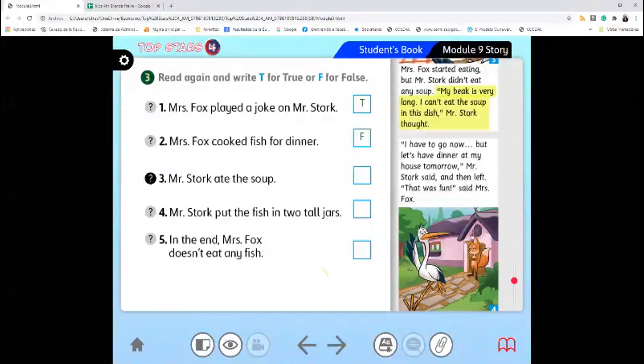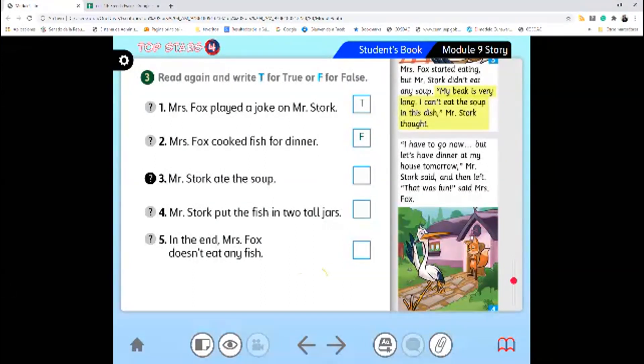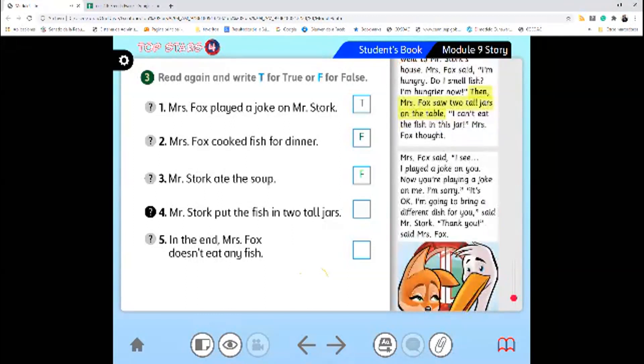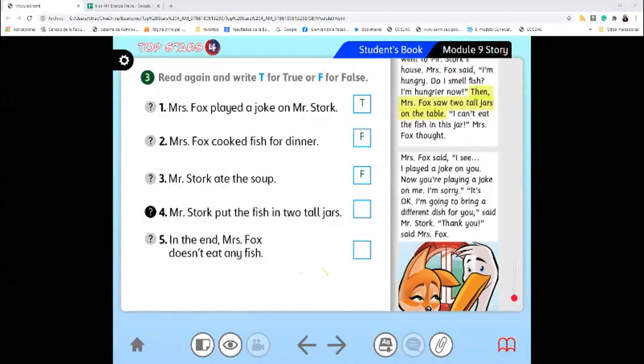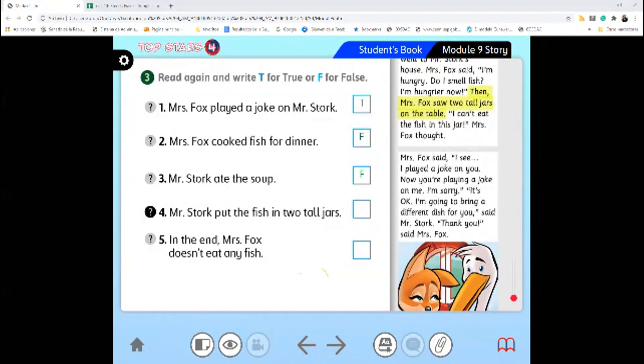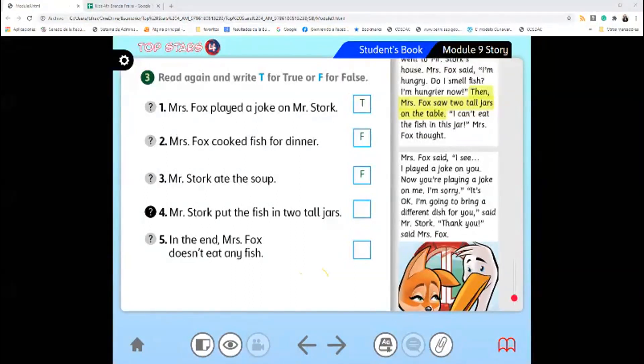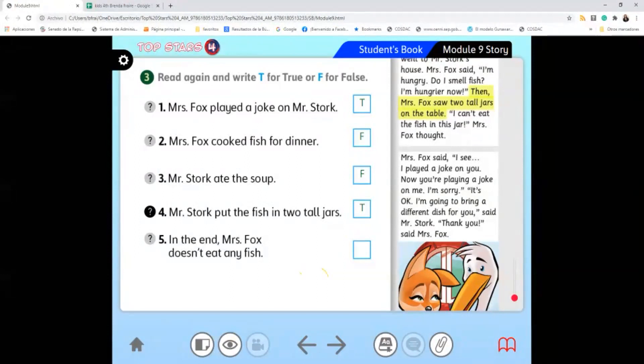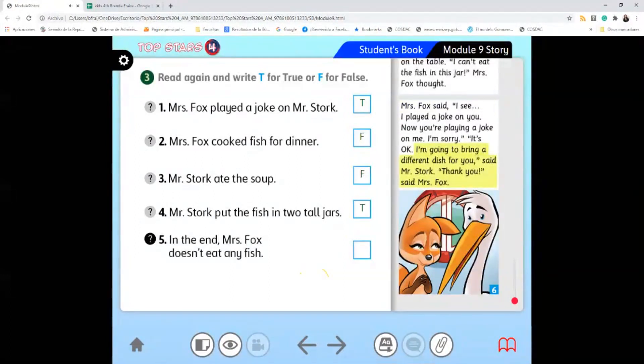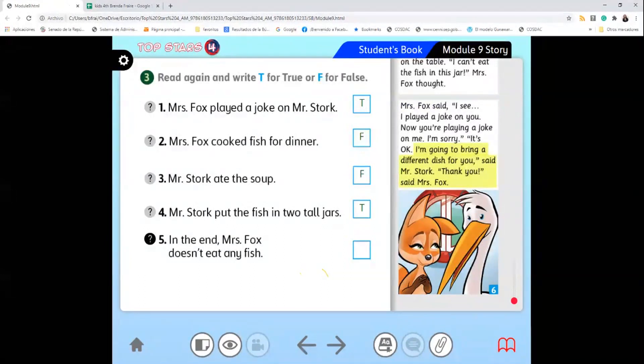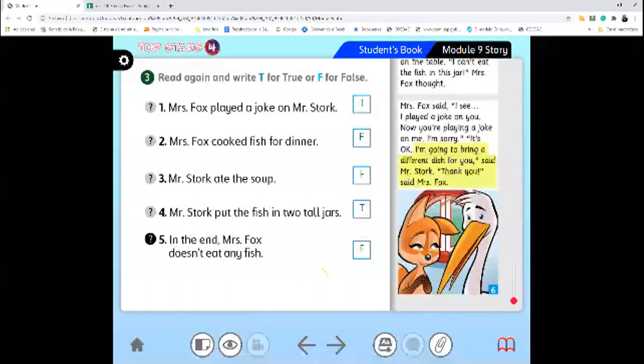'Number three: Mr. Stork ate the soup. Did he eat it? No. It is false. Number four: Mr. Stork put the fish in tall jars. It is true. He put it in two tall jars so she could drink from there. Number five: In the end, Mrs. Fox doesn't eat any fish. It is false. I am going to bring a different dish for you. Very good. Copy your answers, please. And then let's move to the next page.'